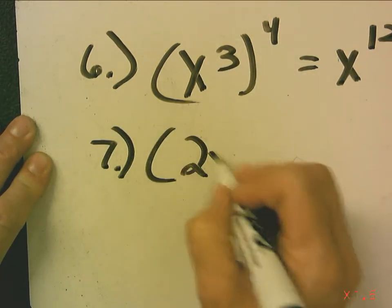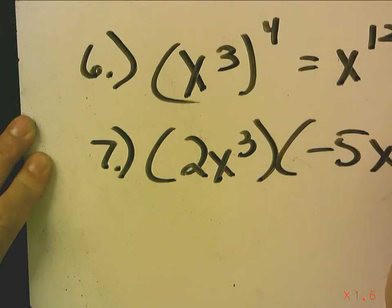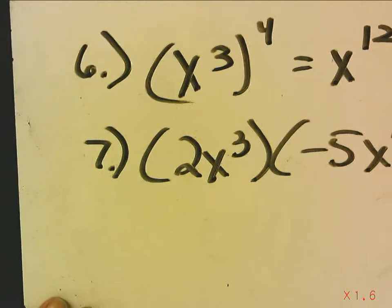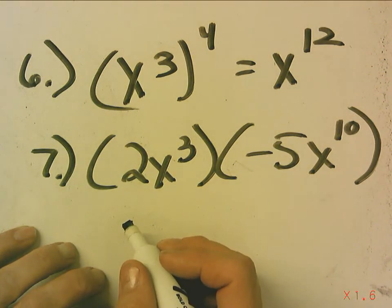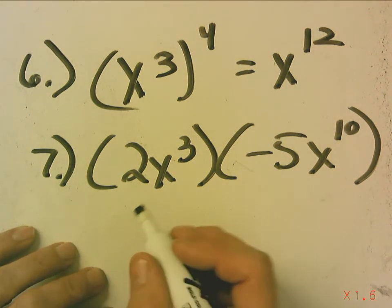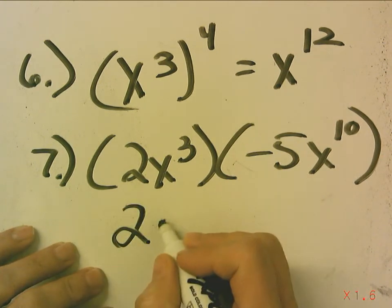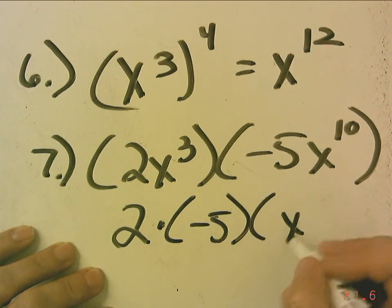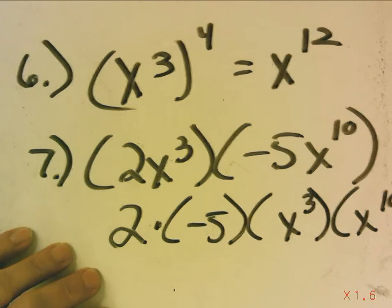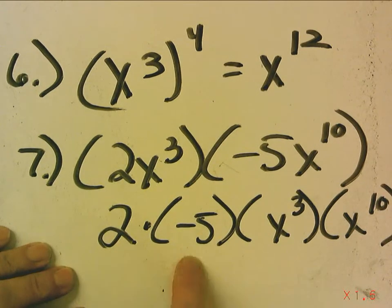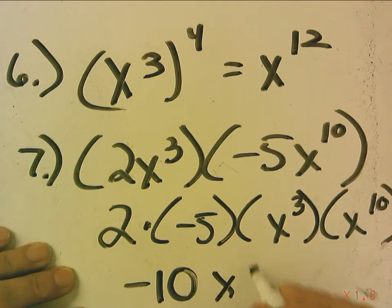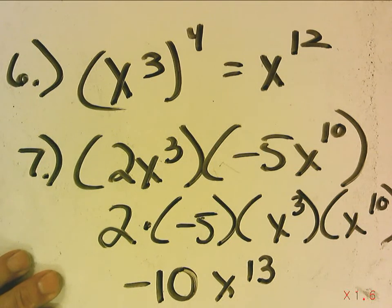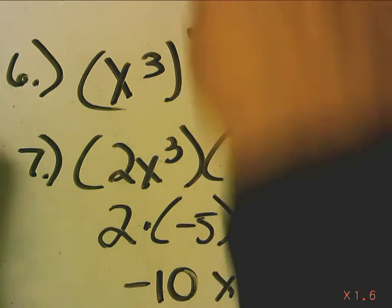Number 7: 2x cubed times negative 5x to the tenth. In this case, this is all multiplication. I am allowed to rewrite multiplication using the commutative property. So I'm going to rewrite this as 2 times negative 5, times x cubed times x to the tenth. I did that to move the terms I'm going to multiply next to each other. So 2 times negative 5 is negative 10. When we have the same base, we add the exponents — so this is negative 10x to the thirteenth. Numbers multiply numbers, and same base, we add the exponents.